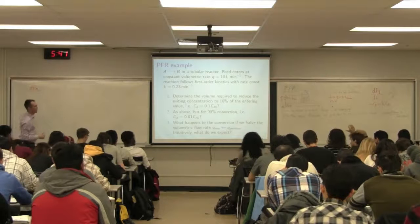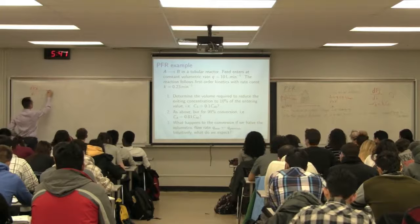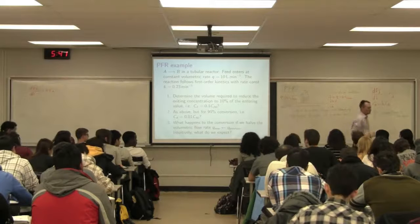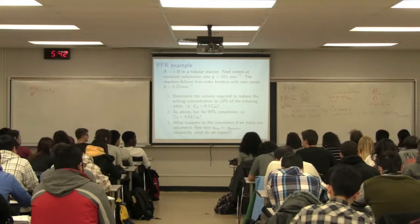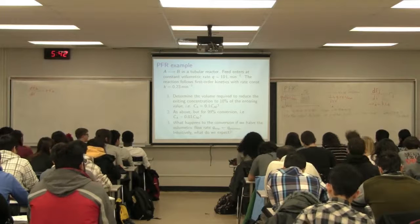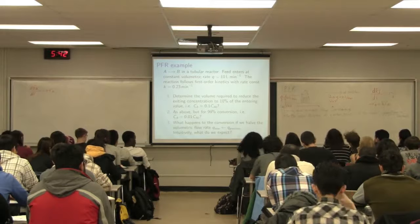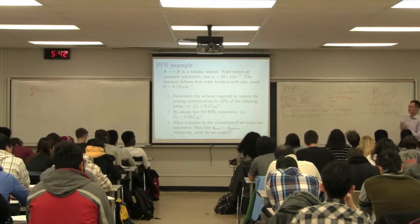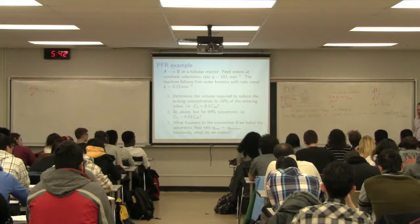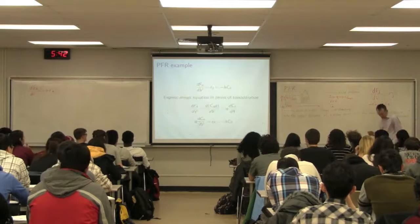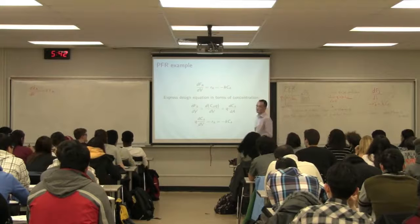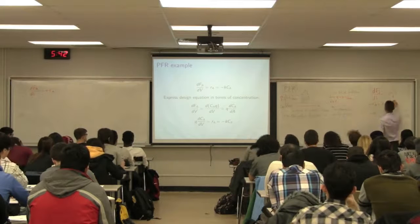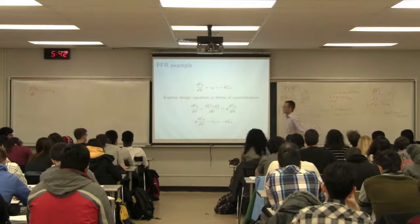Knowing those two assumptions, we can write down dFa/dV equals Ra. Substituting in Ra equals minus k times Ca. One important point: we would like to know the exit concentration. We were given the starting equations in terms of molar flow — molar flow and concentration don't quite match. So let's get them matching.